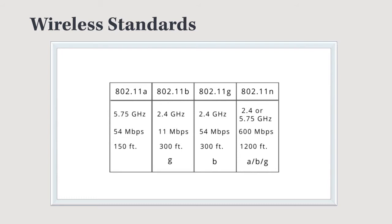The N network can operate on either the 2.4 or 5.75 GHz bandwidth. Typically you'll have multiple antennas and you have to designate which bandwidth each antenna will transmit and receive on. For example, if you intend to use the N network with B and G devices for backwards compatibility, you'd set all antennas to transmit and receive on 2.4 GHz — meaning it won't be able to connect to 802.11a devices.